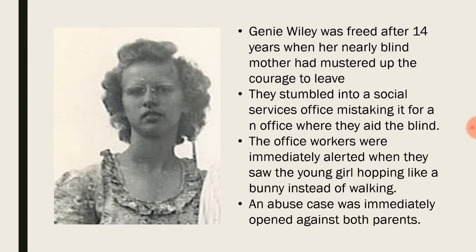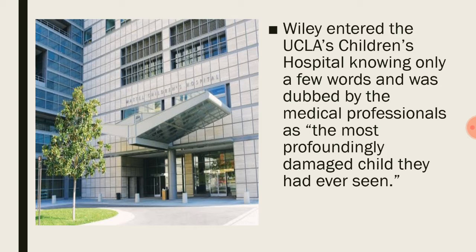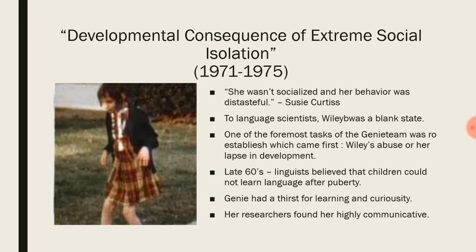Genie Wiley was freed after 14 years when her nearly blind mother, Irene Oglesby, mustered up the courage to leave. They stumbled upon a social services office, mistaking it for an office for the blind. The office workers were immediately alerted when they noticed the young girl hopping like a bunny instead of walking. An abuse case was immediately opened against both parents, but Clark Wiley killed himself shortly after the trial. Genie entered UCLA's Children's Hospital knowing only a few words and was dubbed by medical professionals as the most profoundly damaged child they had ever seen.